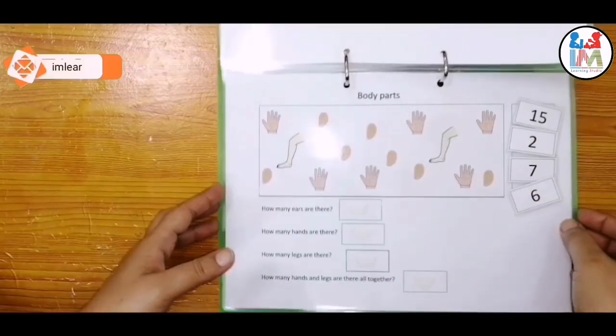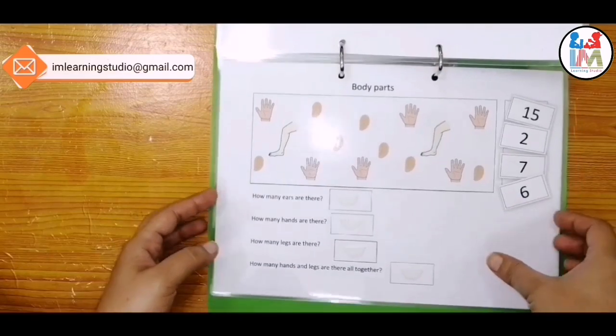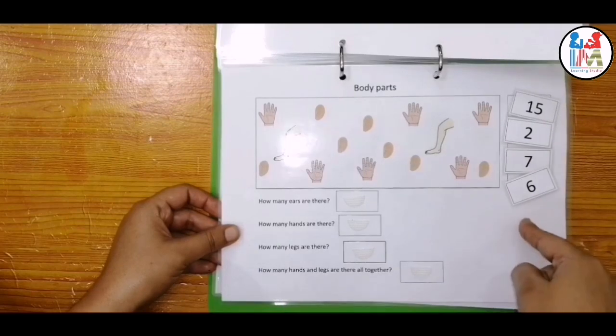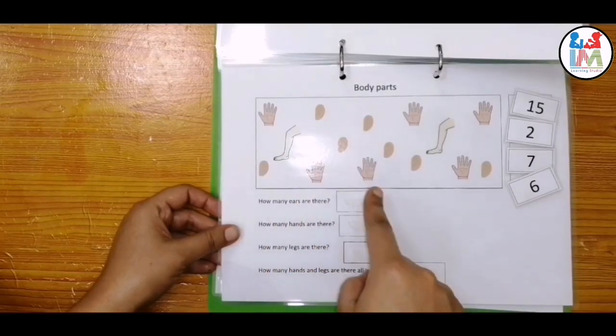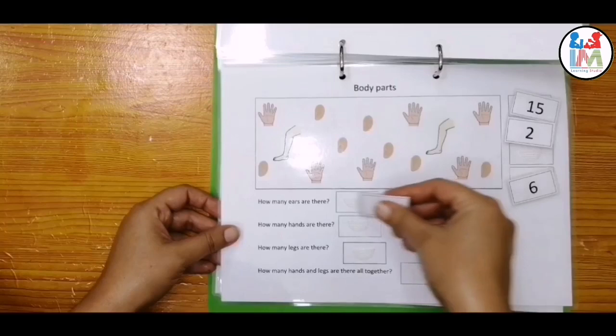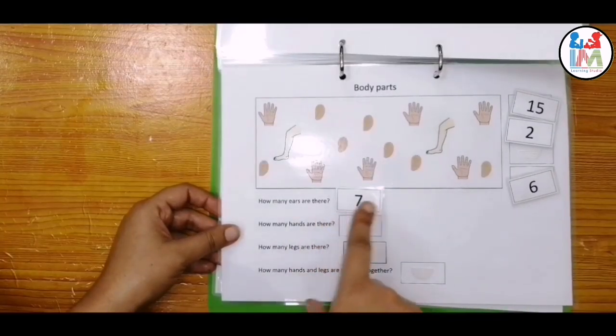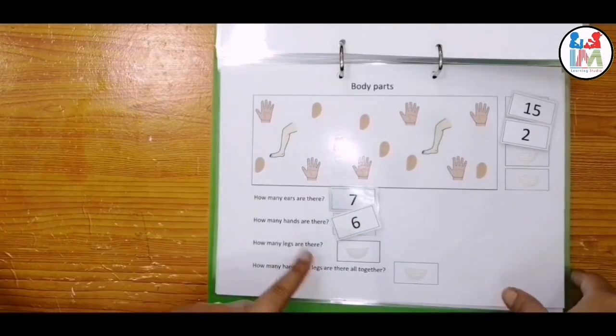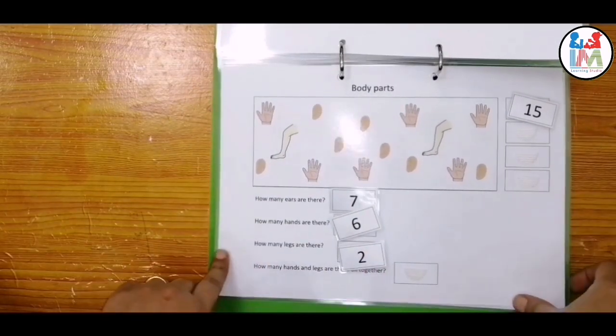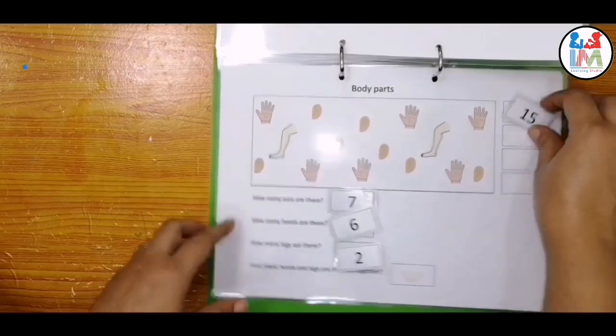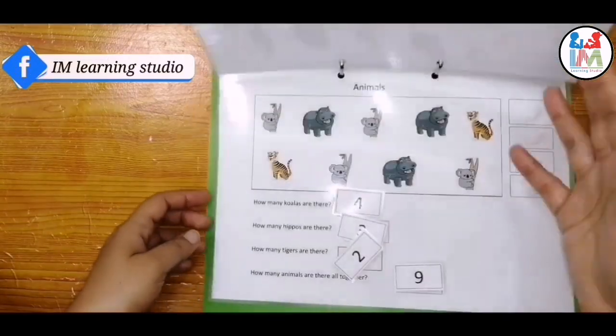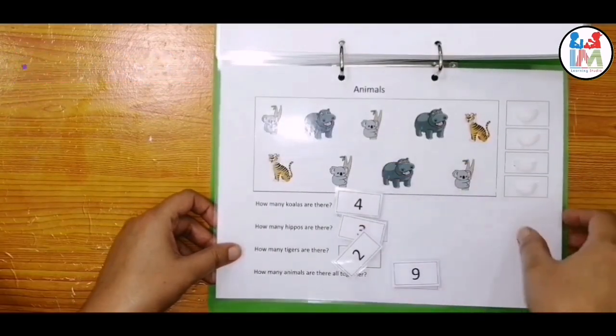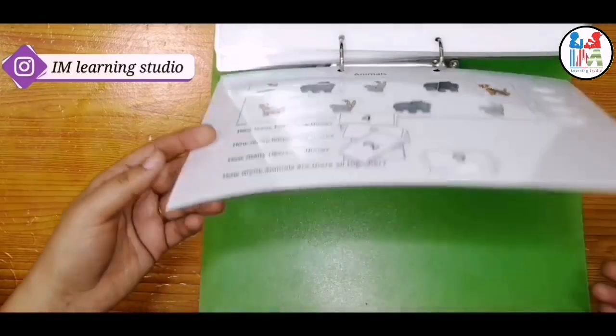These are all here. Also given the same concept as before. Body parts are given. How many ears are there? These are seven. Next, how many hands are there? These are six. And how many legs are there? Two. And how many hands and legs are together? Fifteen. The same concept here again with animals, and this is the end.